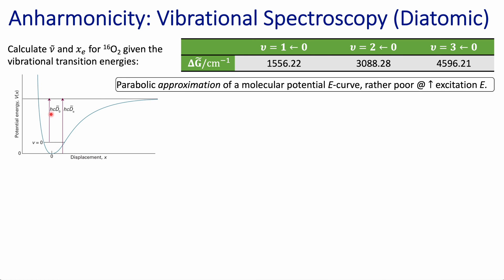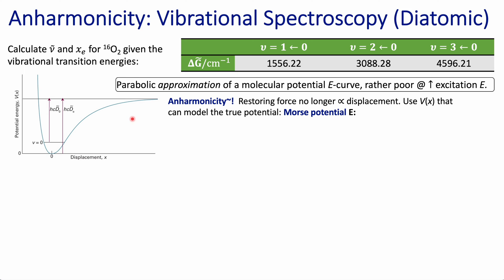With that, we can think about the different parameters involved in this potential. The first one, which we already knew from the harmonic oscillator, is the zero point energy of my molecule, corresponding to the ground state vibrational level, all the way up to where the molecule is dissociated. So that's going to be the dissociation energy for my molecule, and I have another term related to the depth of my potential well. Because of this asymmetry of my potential, the restoring force is no longer proportional to the displacement. So in order to capture that, we need to introduce the term anharmonicity.